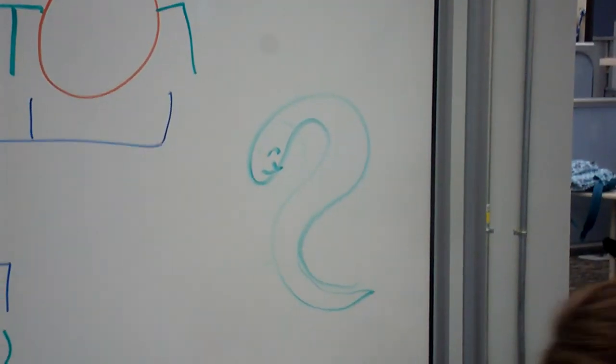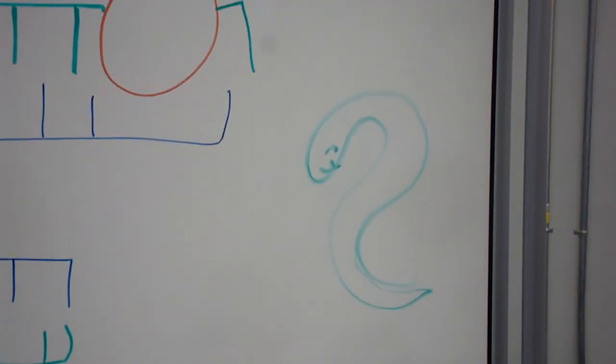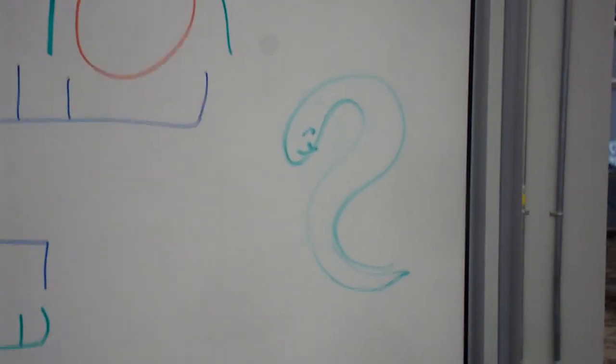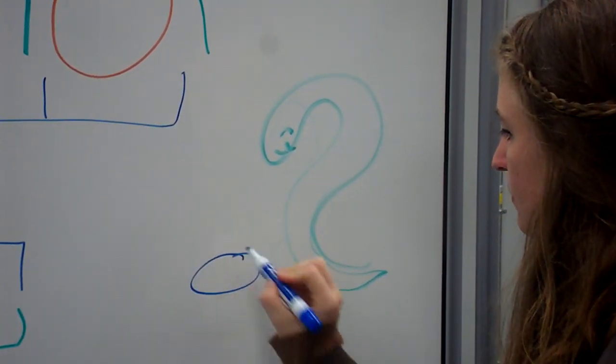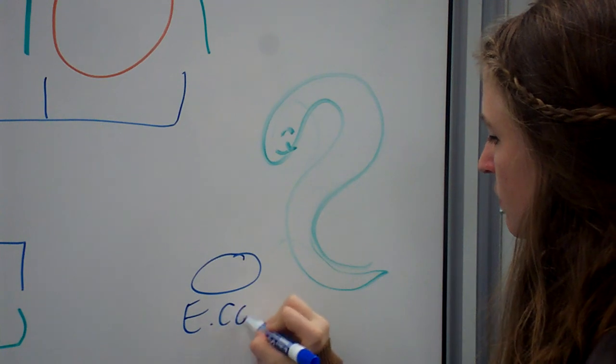C. elegans is a model organism that can undergo RNAi by eating E. coli, which is how the exogenous double-stranded RNA is introduced to the system. They were the primary source of understanding RNAi.